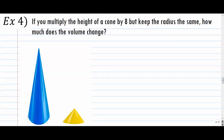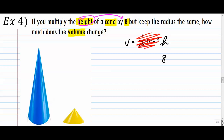Number 4 — cones. The height of a cone is 8 times bigger, but the radius is the same. How much does the volume change? Volume of a cone is one-third pi r² times h. We take h and replace it with 8. All the other stuff is constant from cone to cone, so we forget about it. The answer is 8 times — the volume is 8 times bigger.